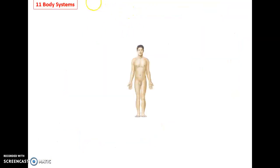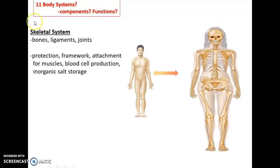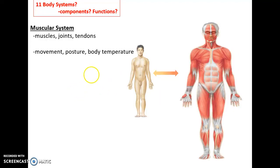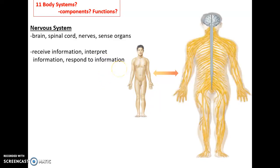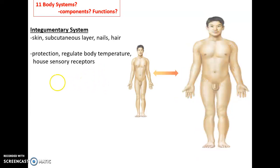The eleven body systems: The skeletal system, with bones, ligaments, and joints, functions to protect soft tissues, provide a framework for the body, provide attachment for muscles, produce blood cells, and store inorganic salts such as calcium. The muscular system — muscles, joints, and tendons — is involved in movement, posture, and body temperature. The nervous system, with the brain, spinal cord, nerves, and sense organs, is important for receiving, interpreting, and responding to information — critical for homeostasis. The integumentary system, including the skin, subcutaneous layer, and associated structures, provides protection, regulates body temperature, and houses sensory organs.